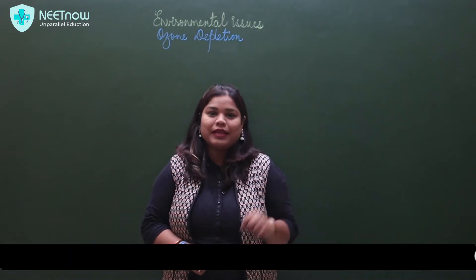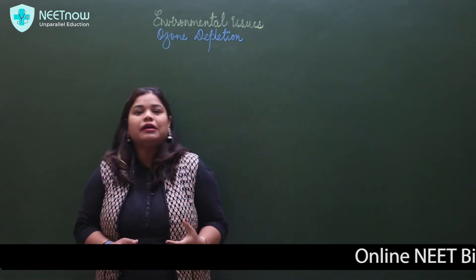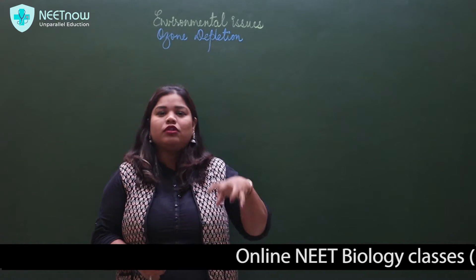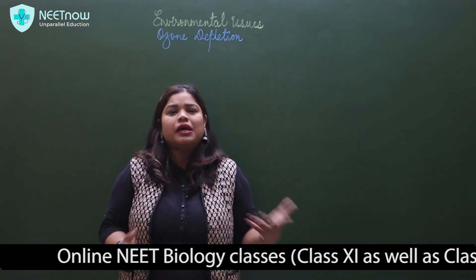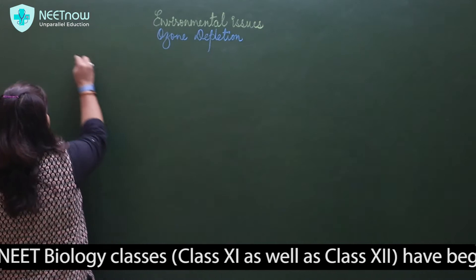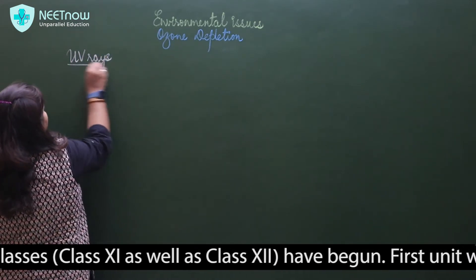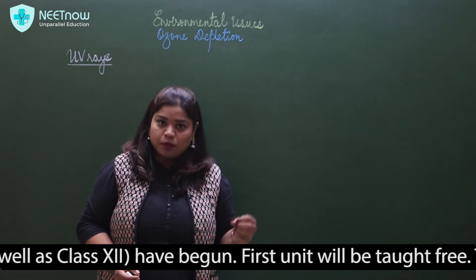If we talk about ozone, in class 11 we have learned that there is a bad ozone which is bad for everything, but there is also a good ozone. The sun rays include ultraviolet rays, UV rays, which are very harmful.